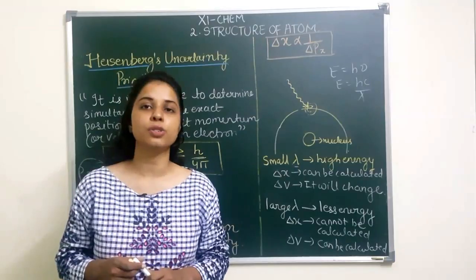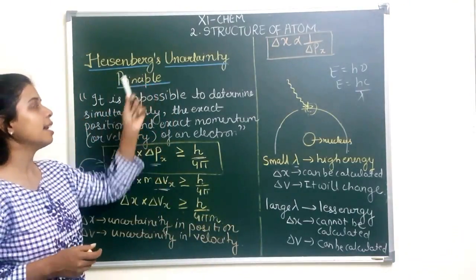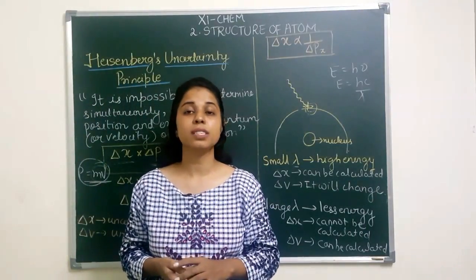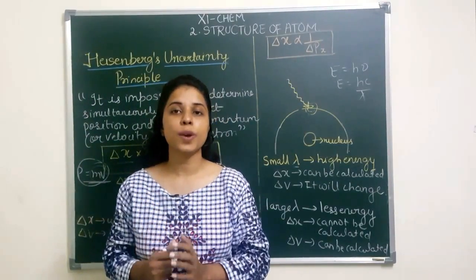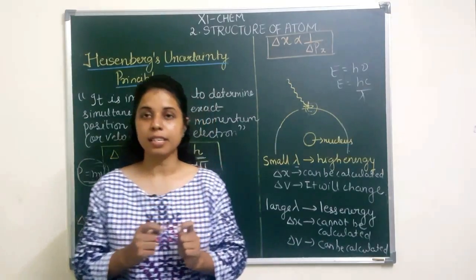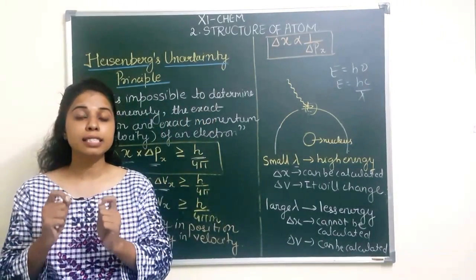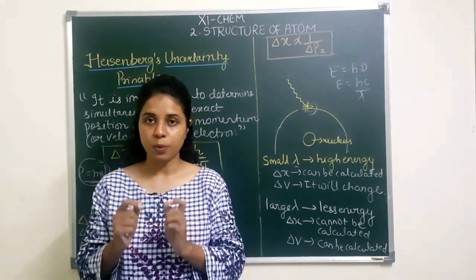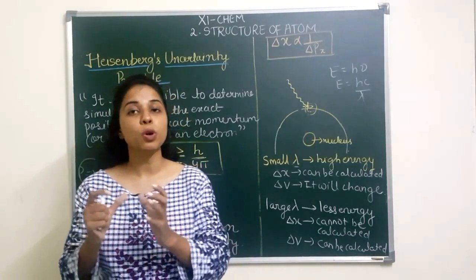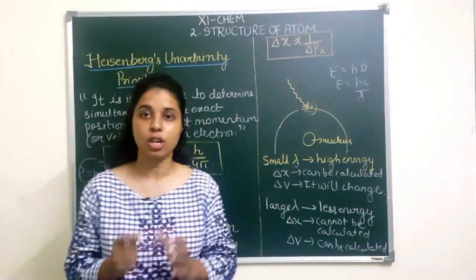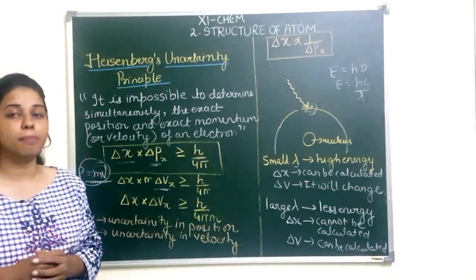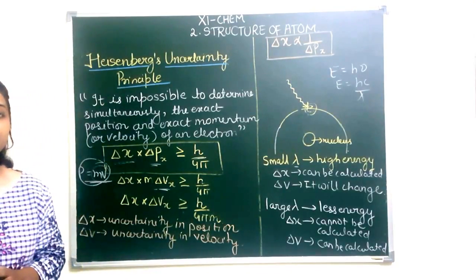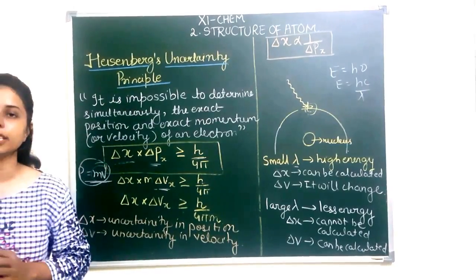In today's session we are going to talk about Heisenberg's uncertainty principle. Heisenberg was a physicist, and in 1927 he gave his uncertainty principle based on the dual nature of matter. We know that matter shows both wave nature as well as particle nature. Based on the wave nature and particle nature, Heisenberg observed one phenomenon which he named Heisenberg's uncertainty principle.